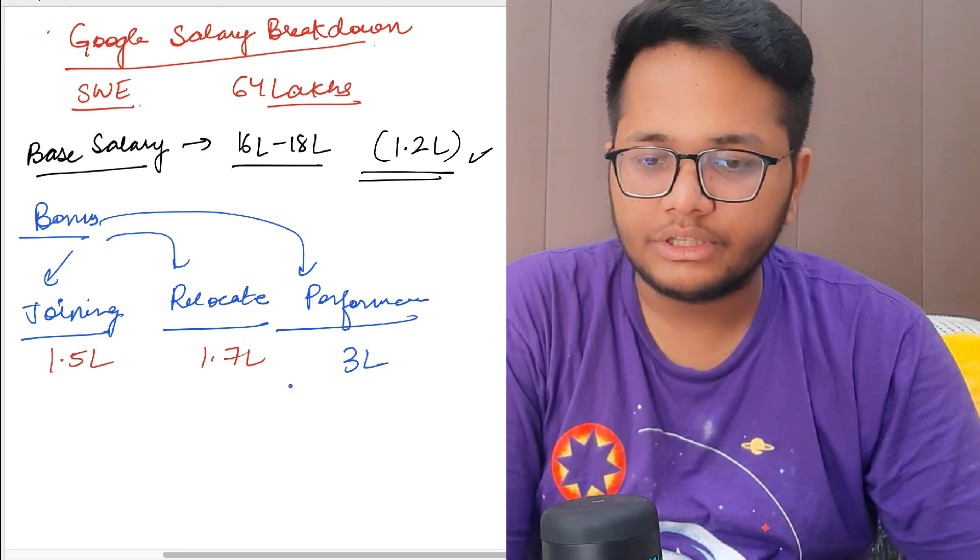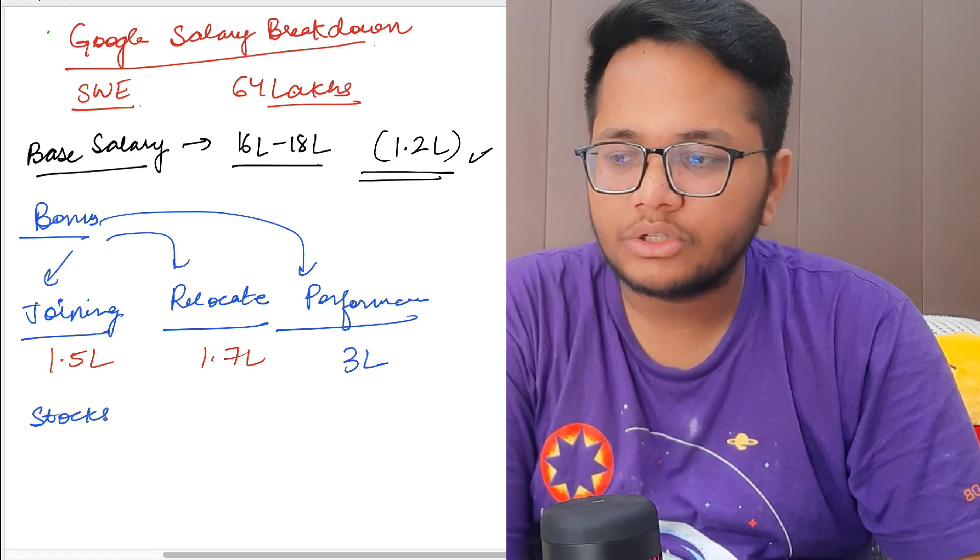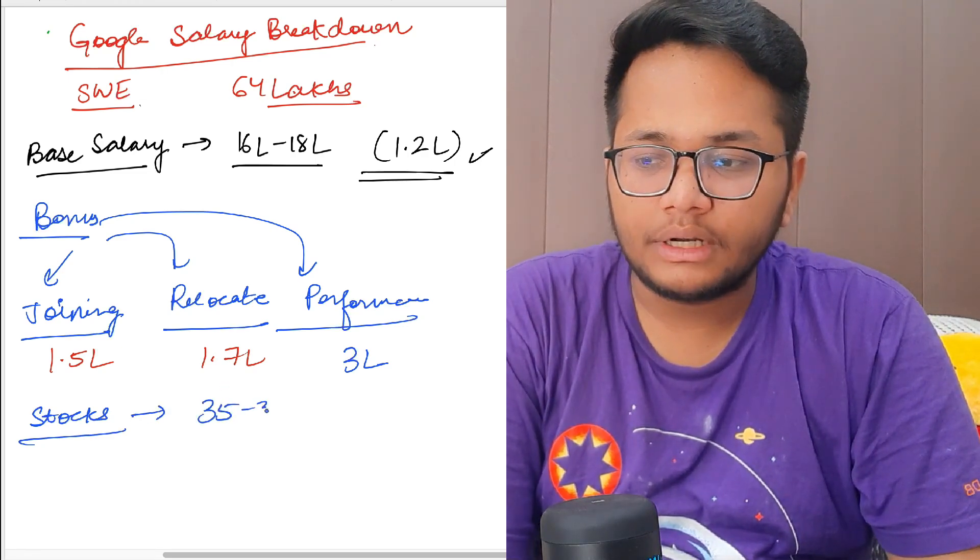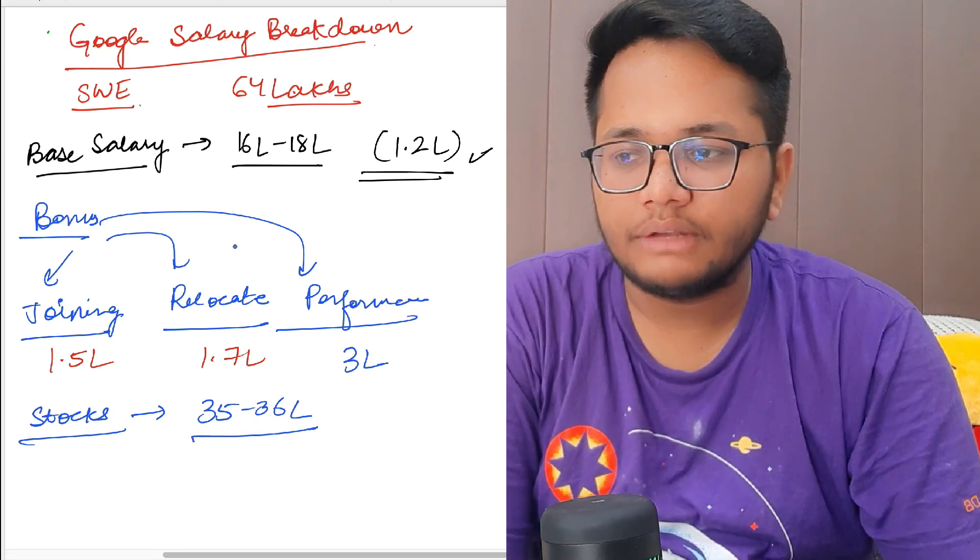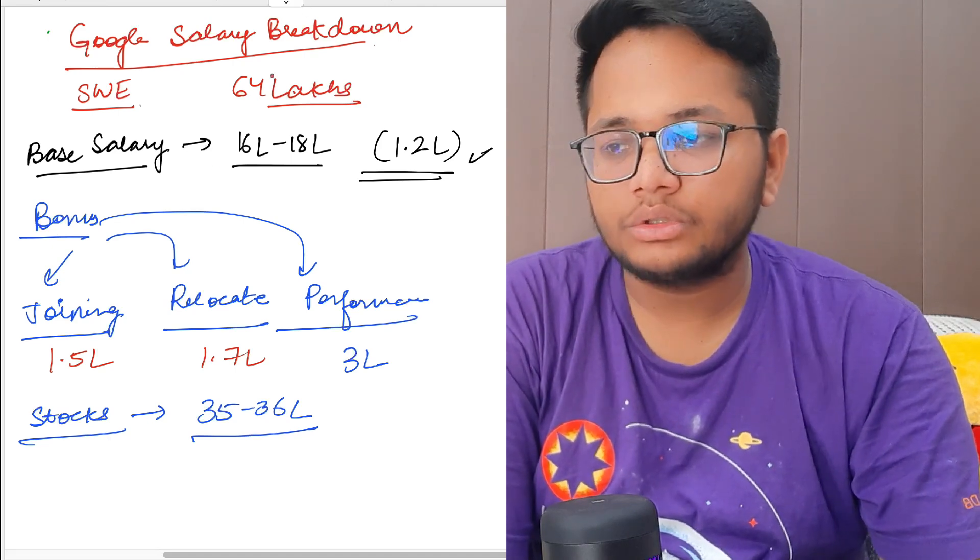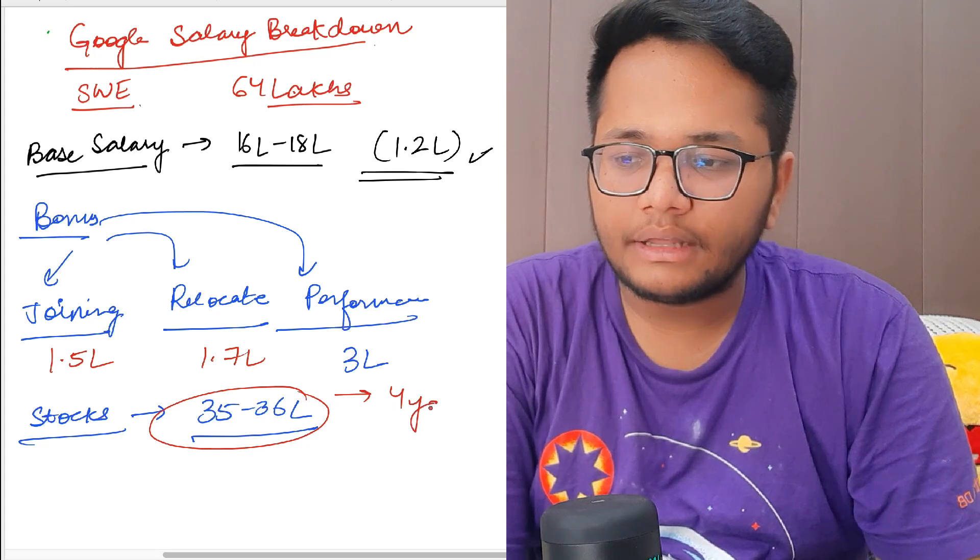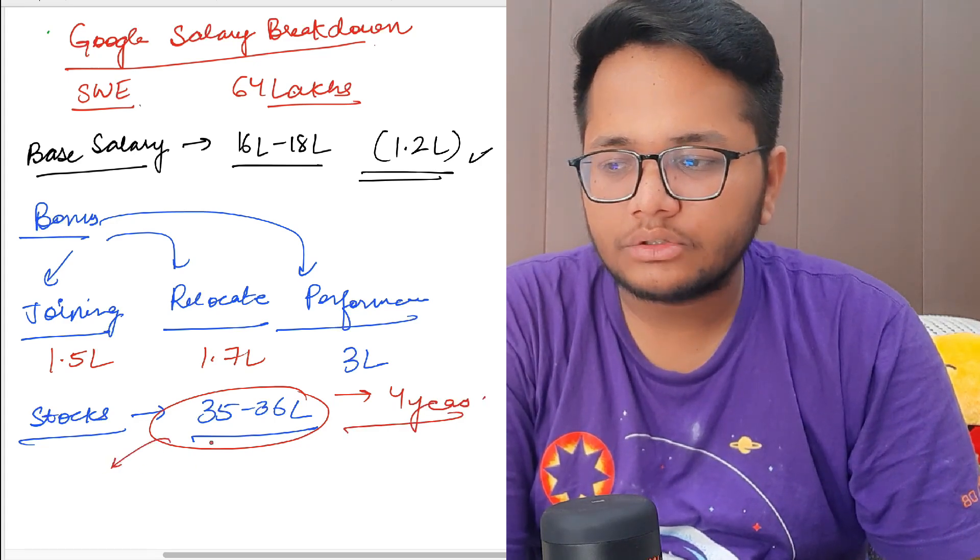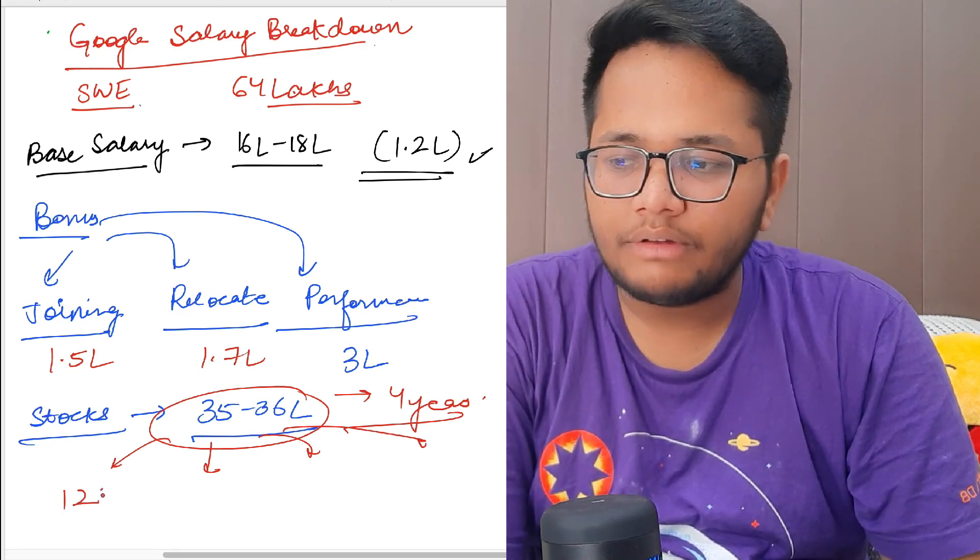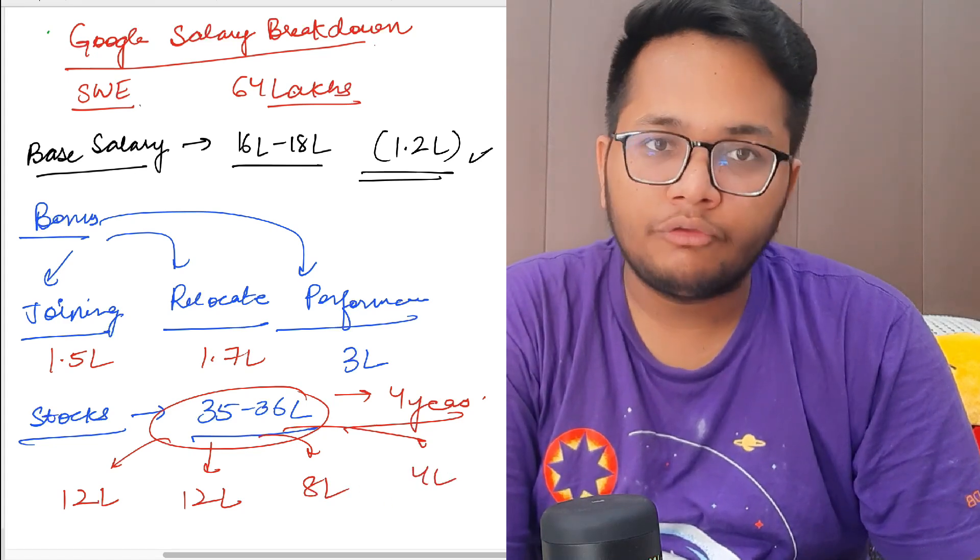Apart from that, if we talk about stocks, stocks also play a major component. Total stocks that Google offers is close to 35 to 36 lakhs. Out of this 64, 35 to 36 lakhs are stocks. These stocks are for 4 years combined. You will get these if you stay in Google for 4 years. The stocks are in these divisions: 12 lakhs for the first year, 12 lakhs for the second year, 8 lakhs for the third year, and 4 lakhs for the 4th year.